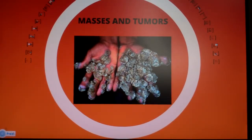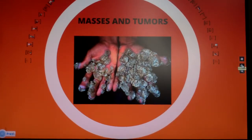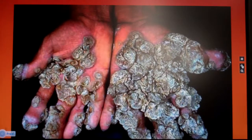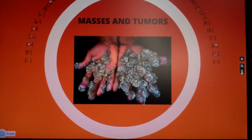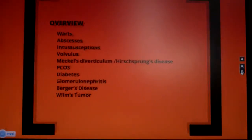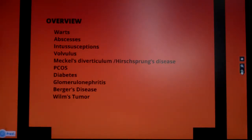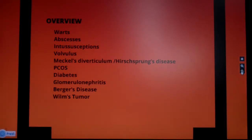Today we're going to be talking about masses and tumors. We're going to try something different with Prezi, which allows us to zoom in really close and look at things like big nasty warts. Topics covered include warts, abscesses, intussusception, volvulus, Meckel's diverticulum, Hirschsprung's disease, PCOS, polycystic ovarian syndrome, diabetes, glomerulonephritis, Berger's disease, and Wilms tumor.